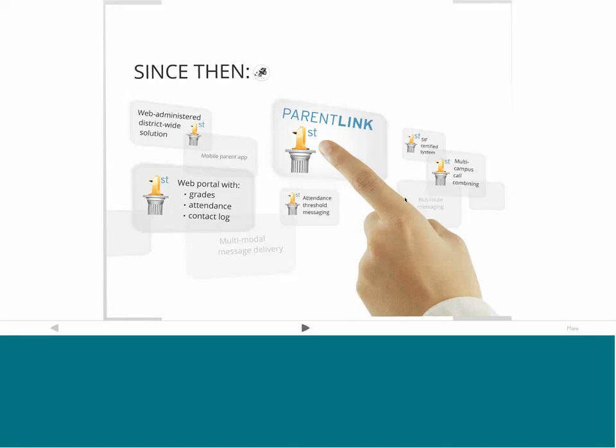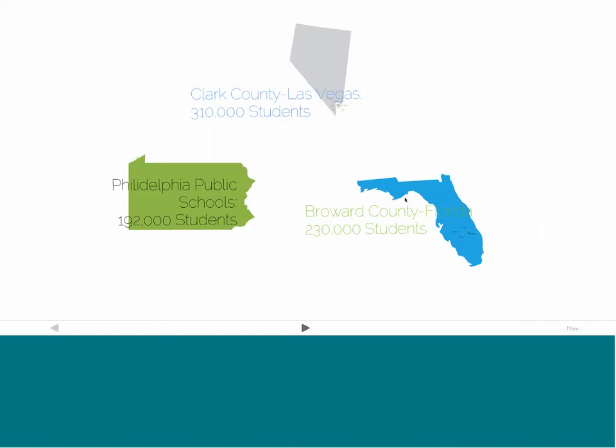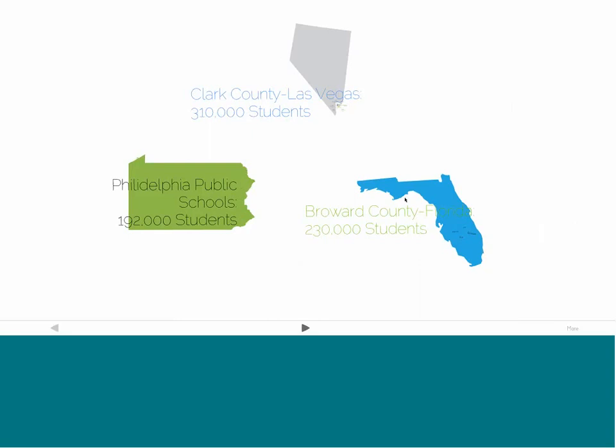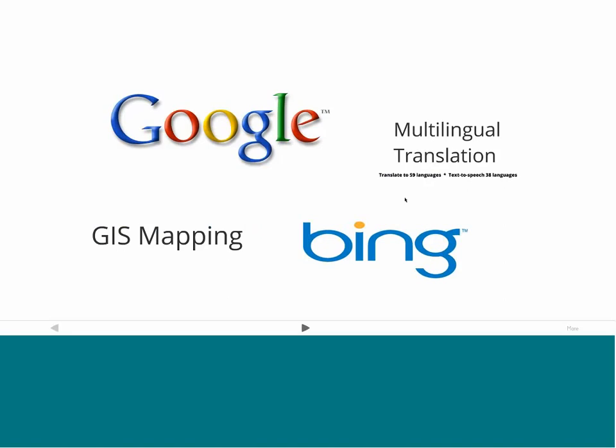Many of our ideas came from our clients. Five of the ten largest districts have partnered with ParentLink, and what's interesting is that each district is so unique in many ways, but what is not unique is their need to create better educational communities and their need for tools that reach parents, staff, students, and community members the way they want to be reached. We're excited about our partnerships with Google and Bing — they allow us to translate to 59 different languages, and we can do text-to-speech in 38 of those languages. Surprisingly, it's pretty good — not that traditional robot talk.